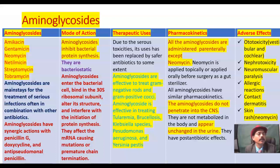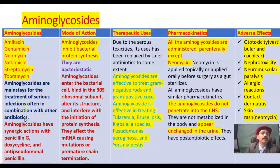The aminoglycosides are amikacin, gentamicin, neomycin, netilmycin, streptomycin, and tobramycin. They are mainstays for treatment of serious infections, often in combination with other antibiotics. Aminoglycosides have synergistic action with penicillin G, for example in the management of enterococci or streptococcal infections.